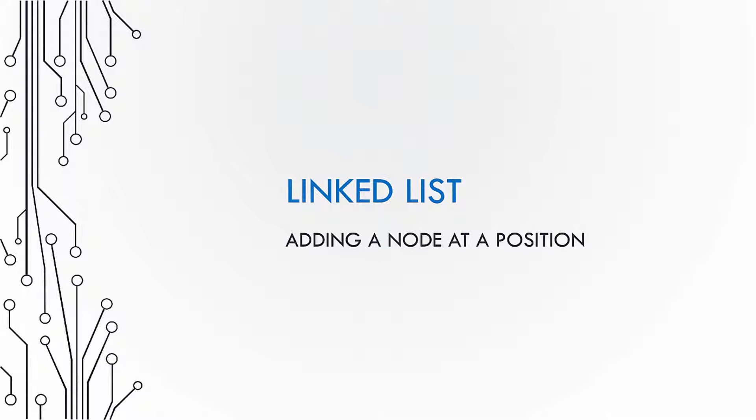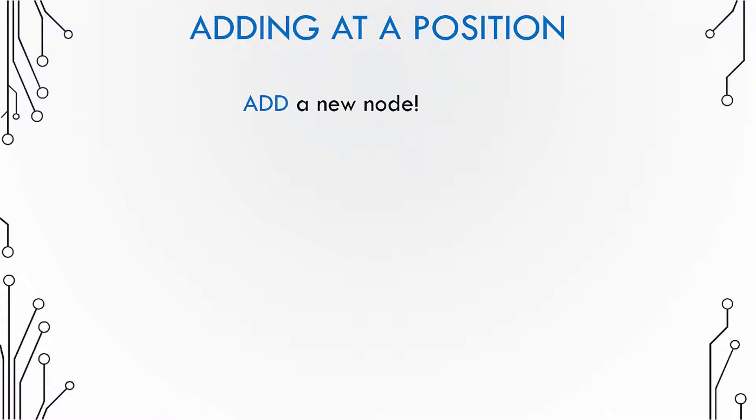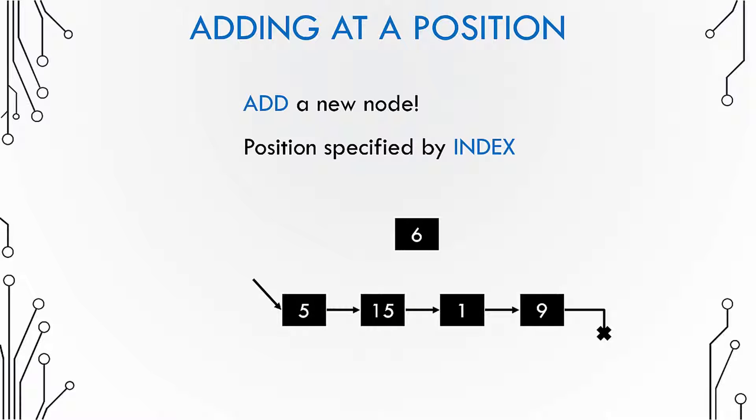In this video we'll be checking how do we add a new node at a particular position in a linked list. So we have to add a new node at a position specified by an index and the node can be added at an arbitrary position.